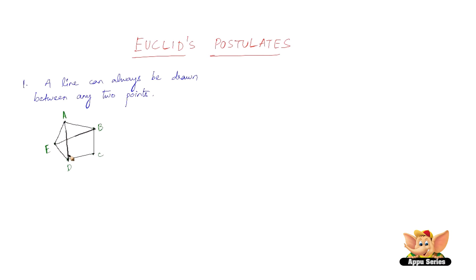A and D are two points, you can join that and make a line. B and D are two points, you can join that and make a line. A and C are two points, you can join that and make a line. A line can always be drawn between any two points.